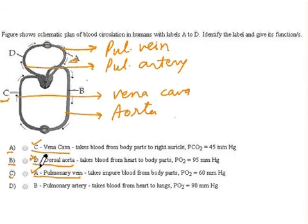Option D says B is pulmonary artery, whereas in the figure D is given as pulmonary artery, so this label is also incorrect.